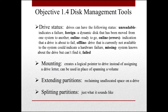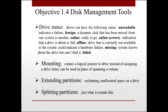Drive status options include: Unreadable, which indicates a failure; Foreign, meaning a dynamic disk moved onto this machine that isn't ready; Online, which means ready to go; Online with Errors, indicating the drive is about to fail; Offline, meaning the drive is not currently available and could indicate hardware failure; and Missing, where the system knows about the drive but can't find it — that drive has failed.